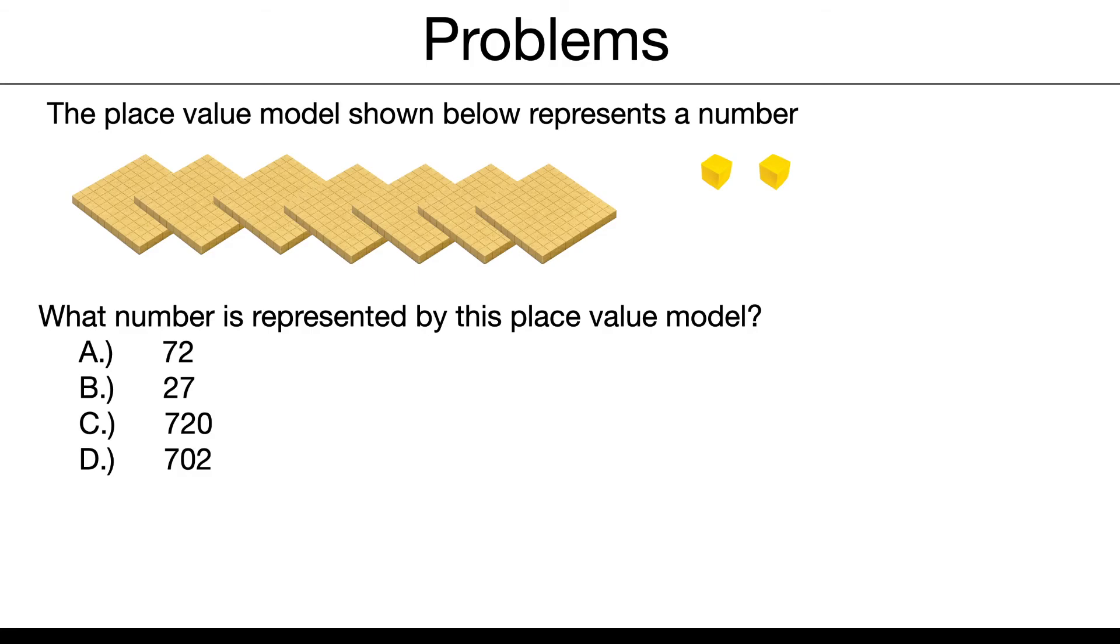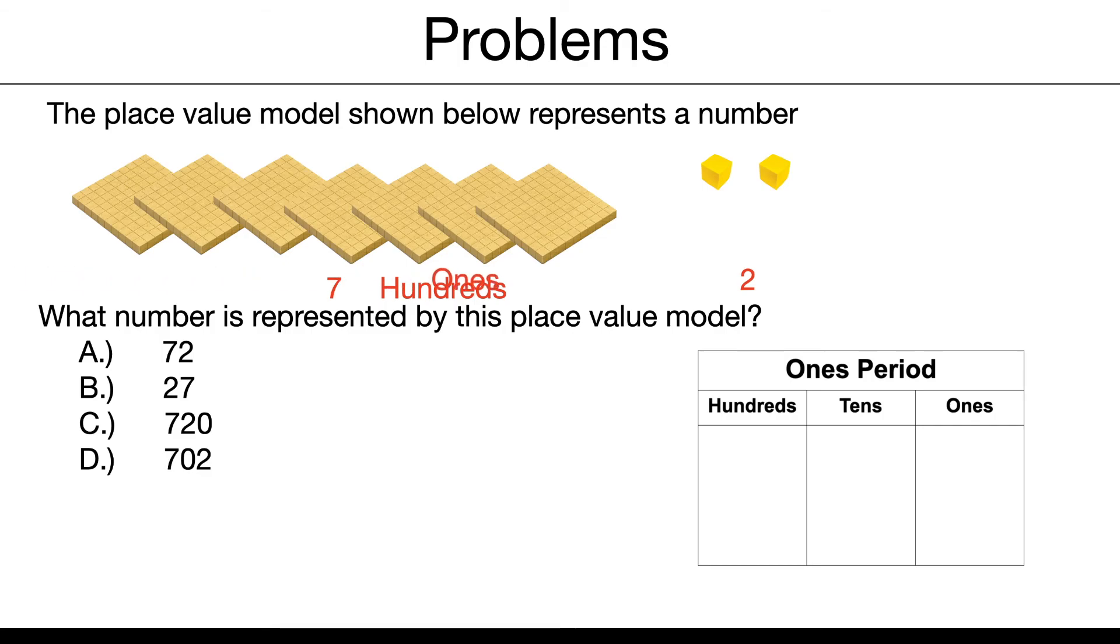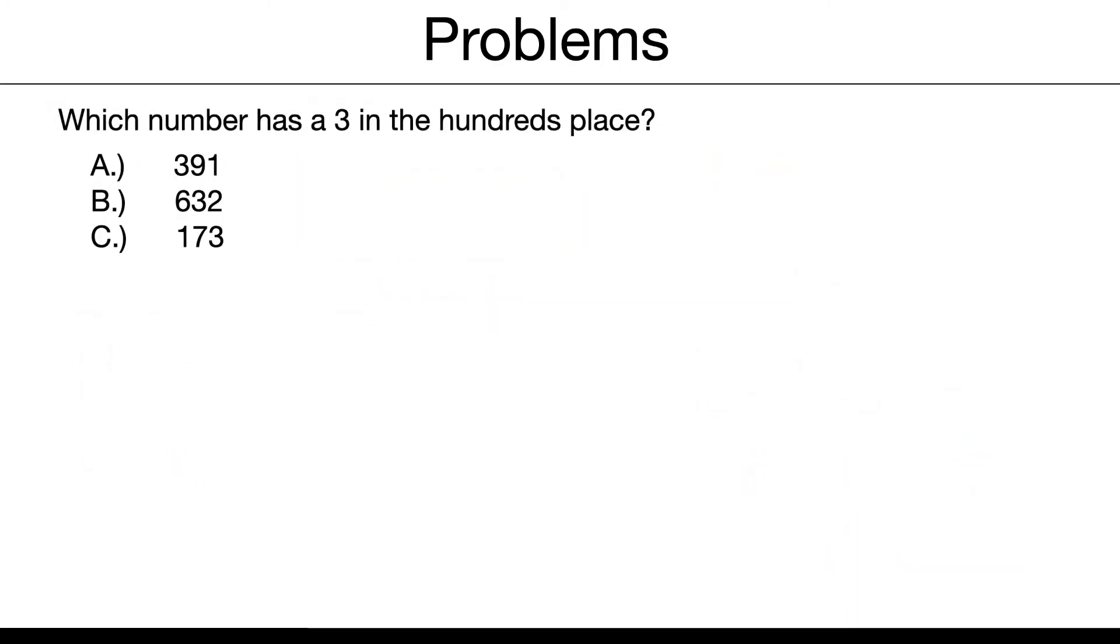The place value model shown below represents a number. What number is represented by this place value model? Well, we have 7 and 2. On a chart, remember that's 7 hundreds and 2 ones. We put that on our place value chart. Notice that we do not have anything for the tens. You've got to put a zero in. So our number would be 702.